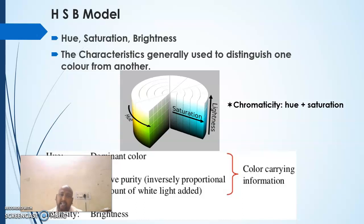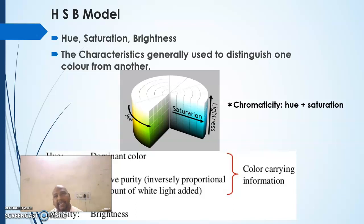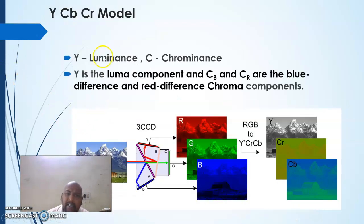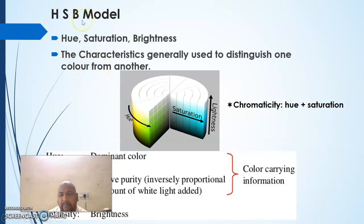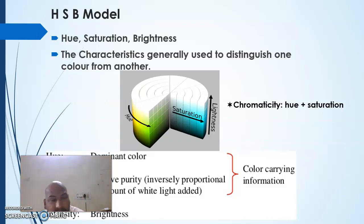Hue can be referred to as the dominant color. Saturation refers to relative purity. Intensity can be referred to as brightness. The HSB model is used for analyzing images because images contain many colors, each with different properties, intensities, and wavelengths.